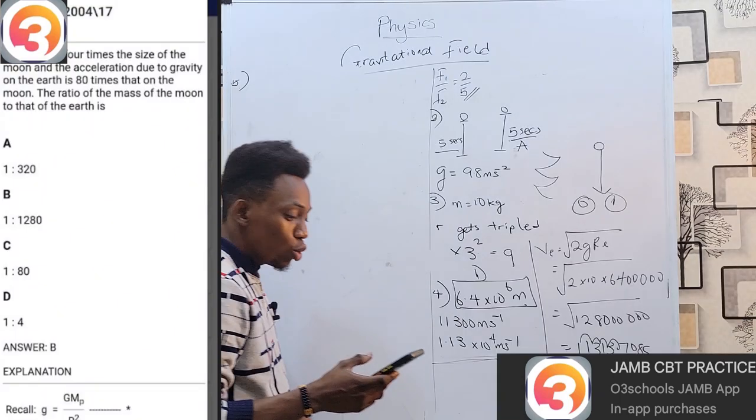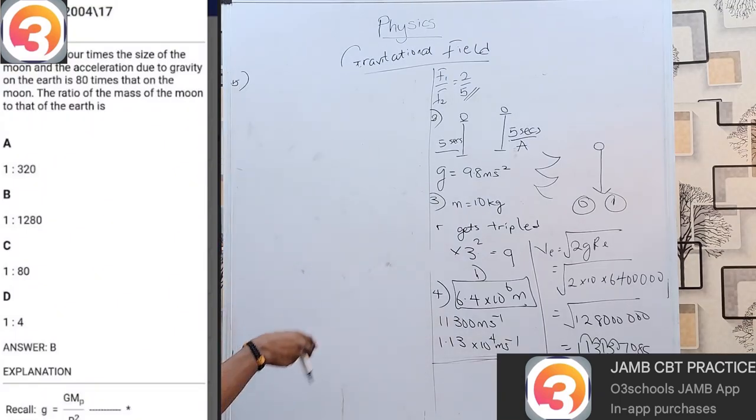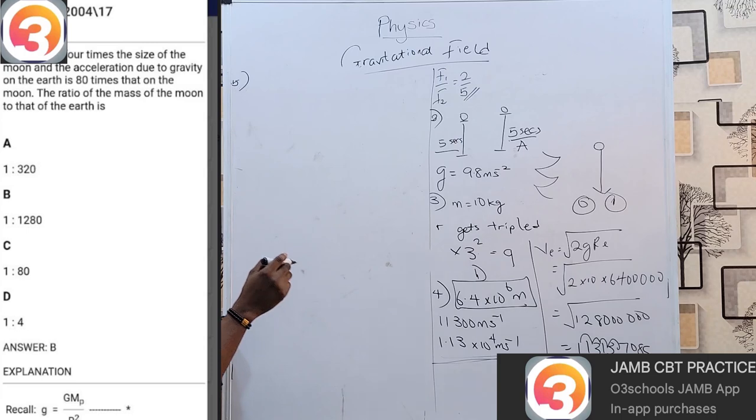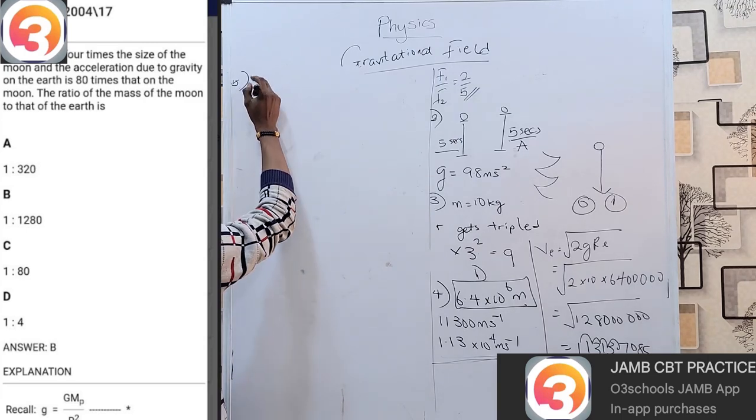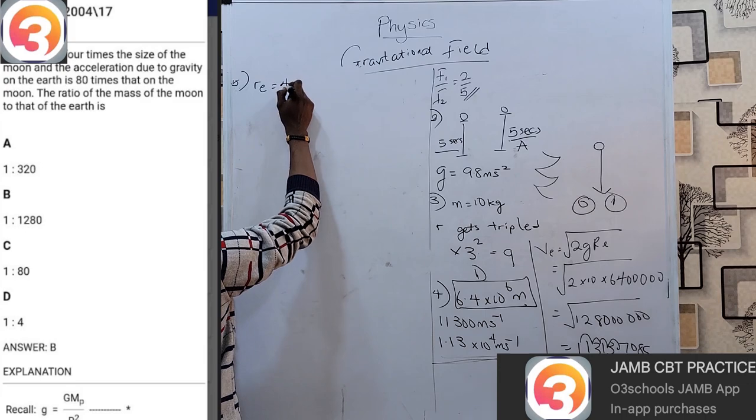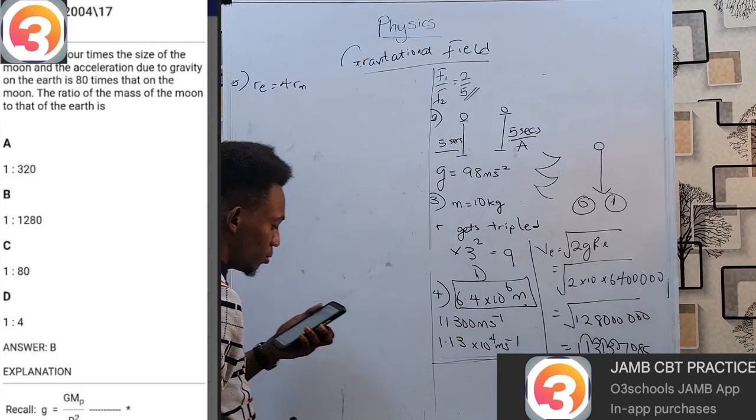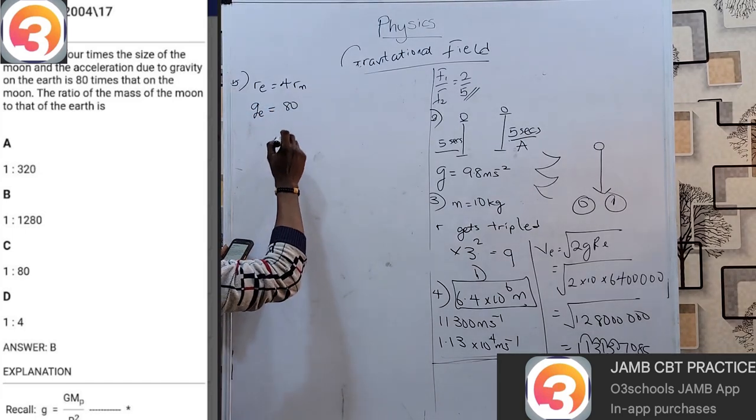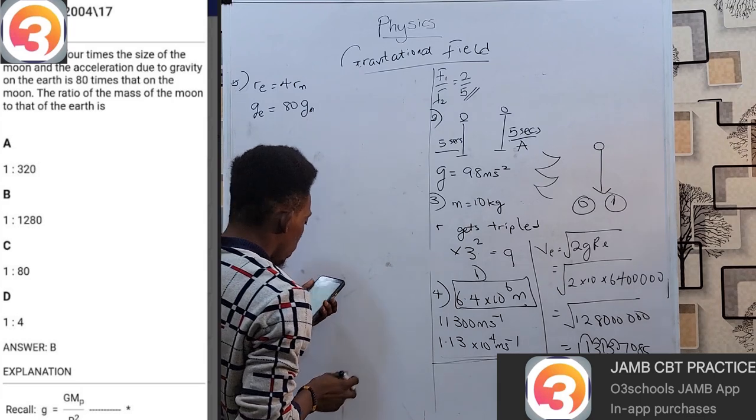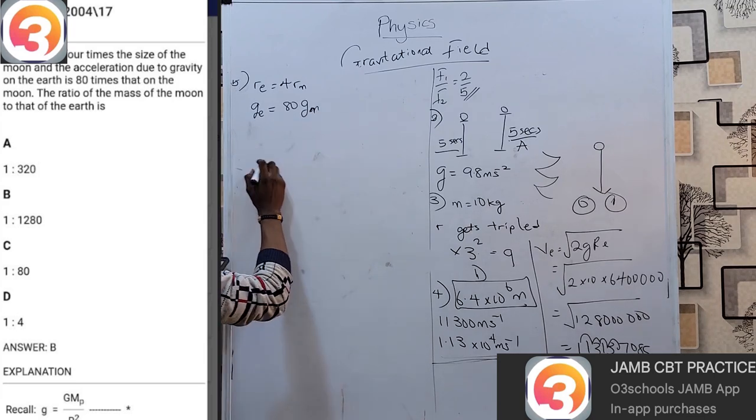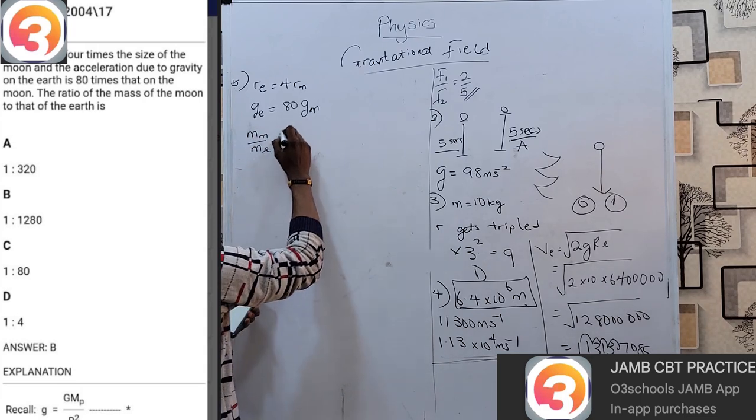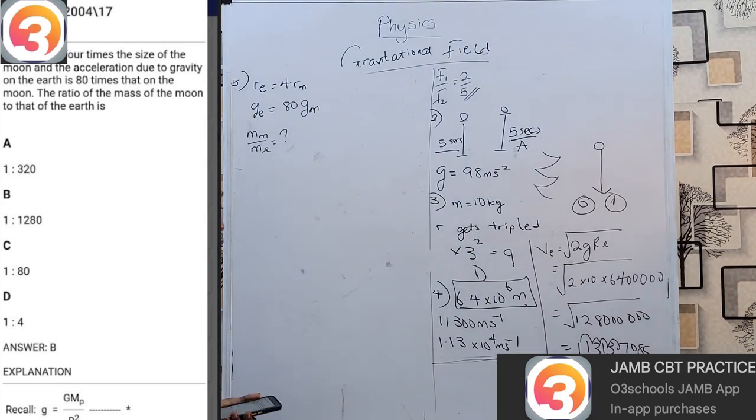Moving on to question number 5, we are told the earth is four times the size of the moon. When you get back size dimensions, that means the radius of earth equals 4 times the radius of the moon, and the acceleration due to gravity on the earth ge is 80 times that on the moon gm. We are being asked right now to find the ratio of the mass of the moon to that of earth: mass of moon over mass of earth.